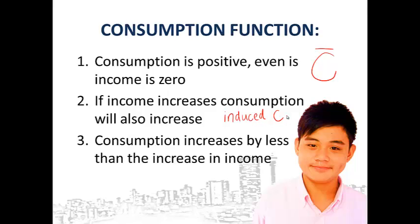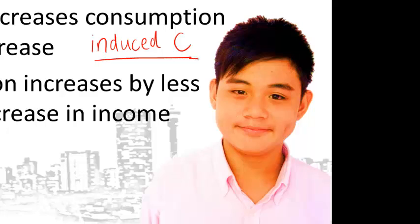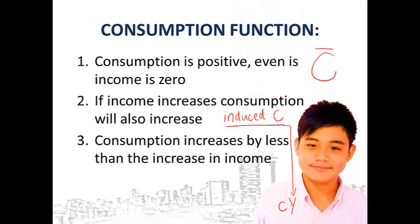Three. When income increases, consumption increases, but by less than the increase in income. For example, if his income increases by 100 Rand, his consumption will increase by less than 100, like 90 Rand, because he will also save 10 Rand. The percentage of income that we spend is called our marginal propensity to consume. Therefore, induced consumption is a certain percentage, shown by small c, times the income that we get. Your total consumption is equal to your autonomous consumption plus your induced consumption, and this we call the consumption function.